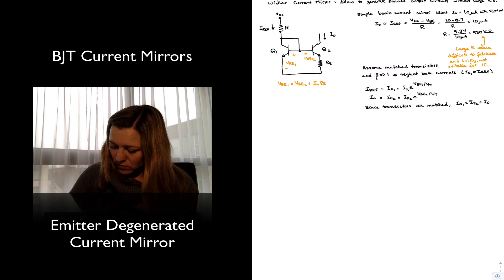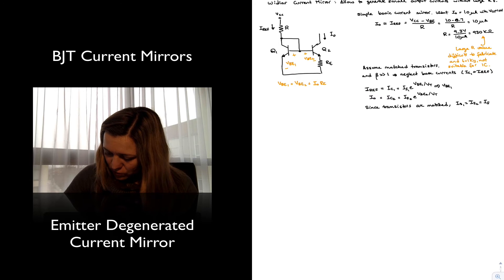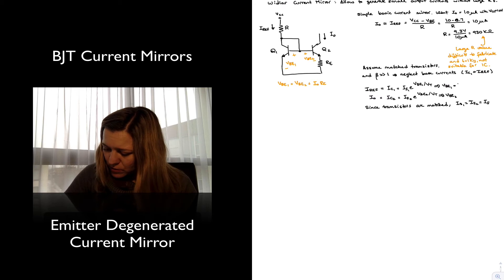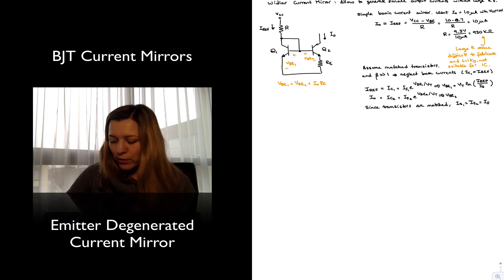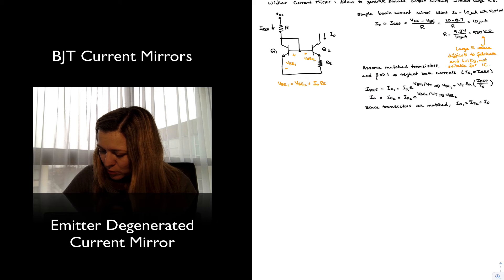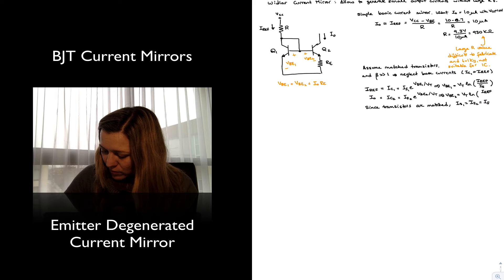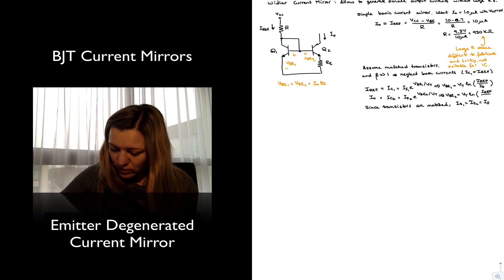So I can go ahead and solve these equations for VBE1 and VBE2. I'll get VBE1 will be equal to VT times the natural log of I_ref divided by IS. And I'm using IS because I'm assuming both IS1 and IS2 are equal to each other. And VBE2 will be equal to VT times the natural log of I_out divided by IS.